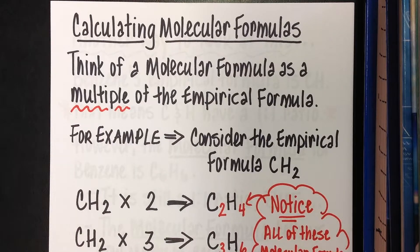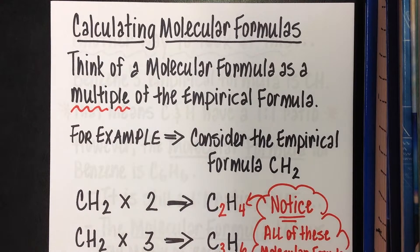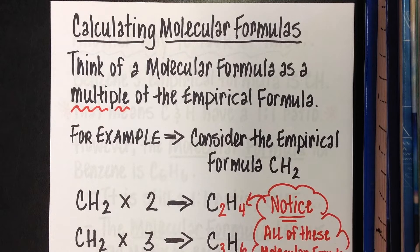The empirical formula is the simplest formula. For example, consider CH2. That is an empirical formula because the 1-to-2 ratio of carbon to hydrogen cannot be reduced any further. But if we have a multiple of that, that's going to be considered the molecular formula.